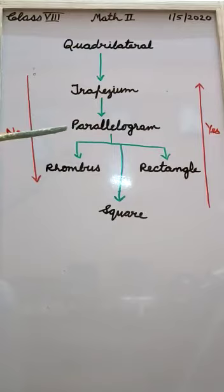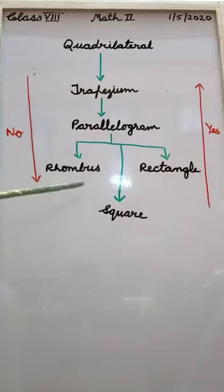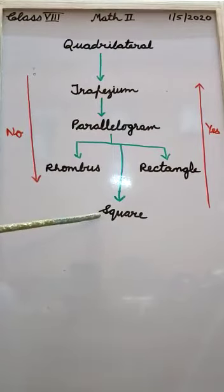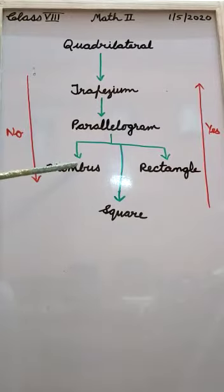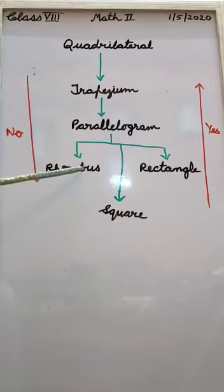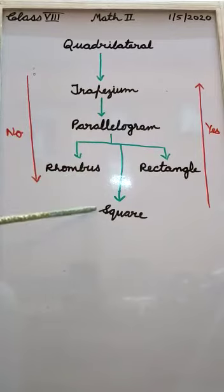As the question given: is square a rhombus? As you are going upwards, your answer will be yes. Square is a rhombus.